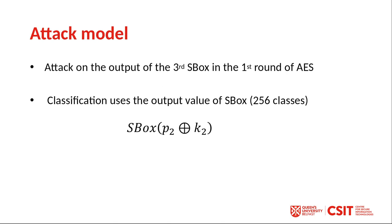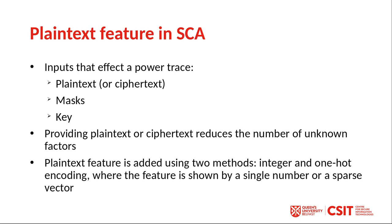As we are using the ASCAD database, we evaluate our work on the third S-box in the first round of AES. Our model classifies the sub-key from the output value of the S-box as shown in this equation. This value is never directly computed because of masking, so we have 256 classes in total. The three inputs that affect a power trace are the plaintext or ciphertext, masks, and the key. Among these, masks and key are considered unknown factors. Providing plaintext as an additional feature to the attacking model reduces the number of unknown factors. The plaintext feature is added using two methods: integer encoding and one-hot encoding.